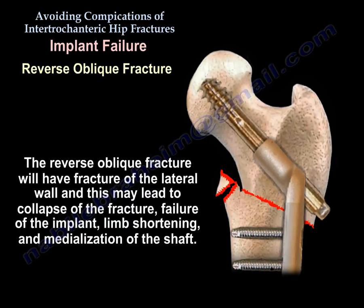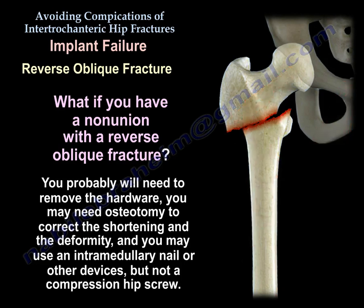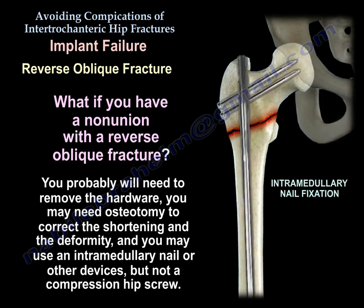The reverse oblique fracture will have fracture of the lateral wall, which may lead to collapse of the fracture, failure of the implant, limb shortening, and medialization of the shaft. If you have a non-union with a reverse oblique fracture, you will probably need to remove the hardware, may need an osteotomy to correct the shortening and deformity, and should use an intramedullary nail or other devices — but not a compression hip screw.